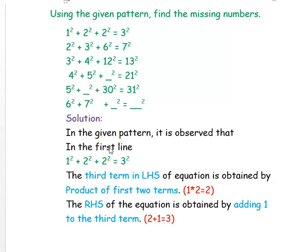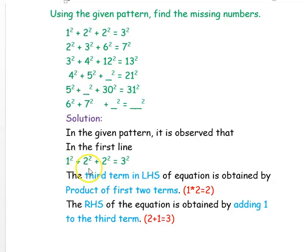We will observe each line and find what pattern is given. In the first line, it is given 1² + 2² + 2² = 3². You have three terms on the left-hand side: 1² + 2² + 2². The third term on the left-hand side is obtained by the product of the first two terms, that is 1 × 2 = 2.